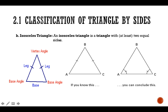Then we come to the isosceles triangle, where at least two sides are equal. The two equal sides have equal base angles. For example, if one base angle is 45 degrees, the other will also be 45 degrees. The base angles of an isosceles triangle are always equal.